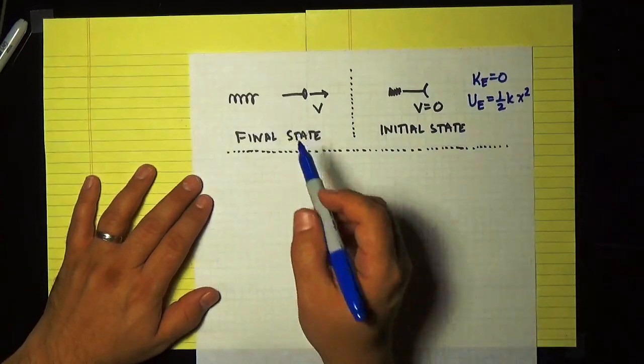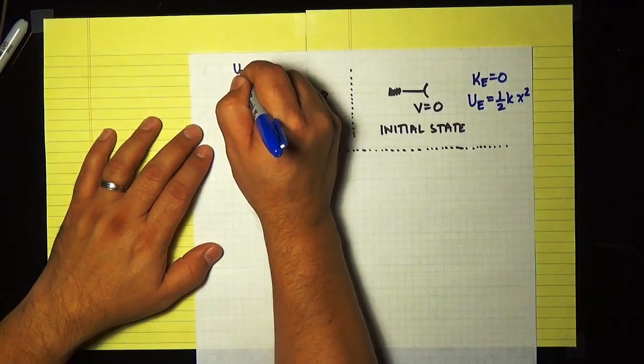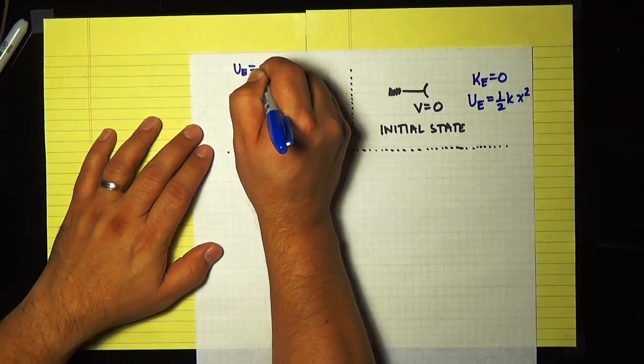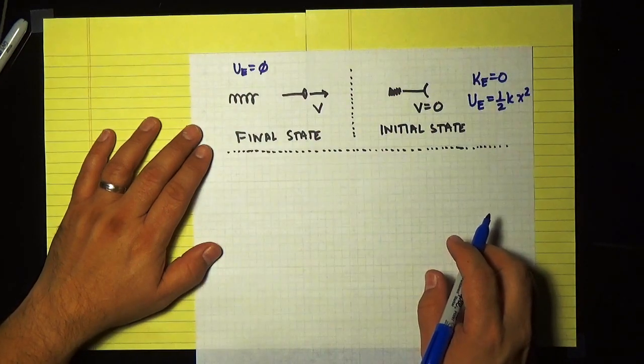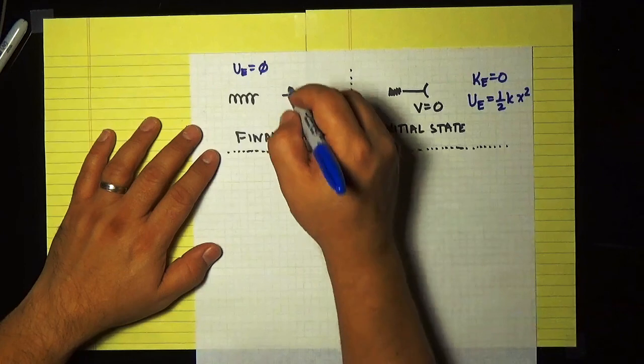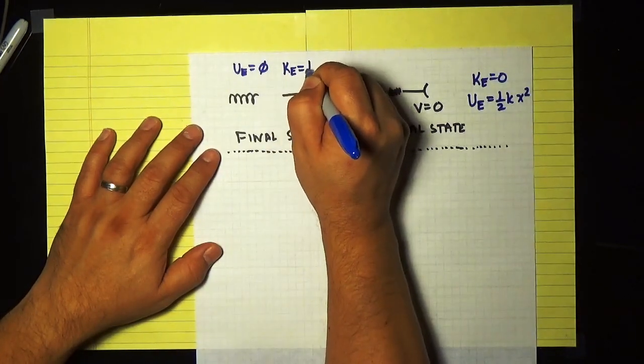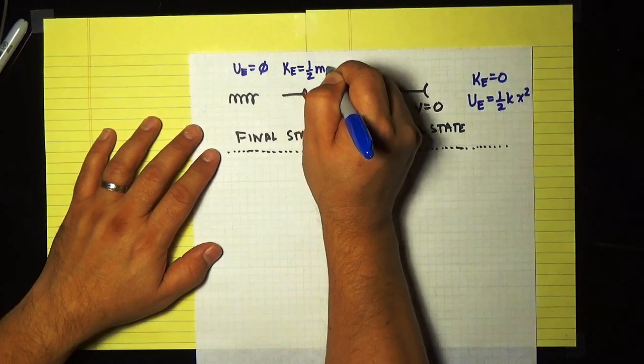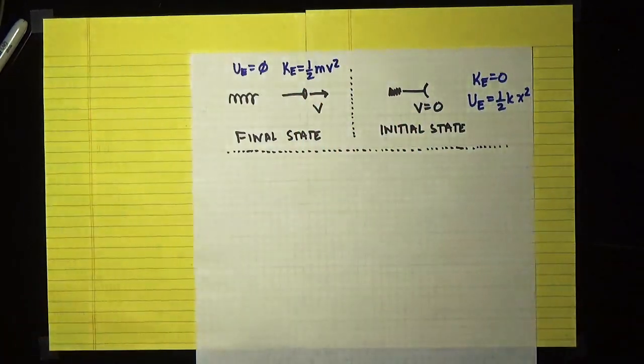Now in the final state, there is no potential energy. The spring has completely expanded at this point. It is no longer compressed. And so there is no potential energy in this part of the problem. Instead, all of the energy is kinetic energy. And that's equal to a half times m times the speed of the dart squared.